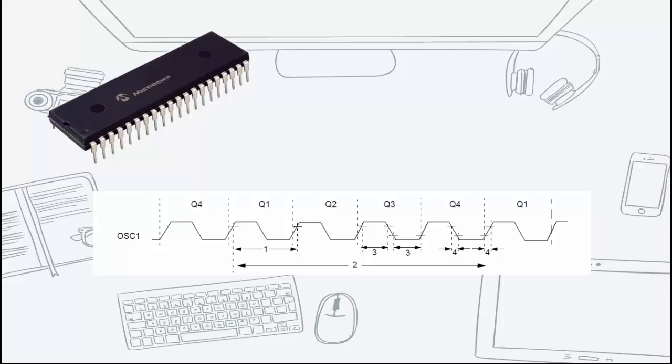Let's take a PIC microcontroller as an example. Each signal that goes into the microcontroller is assigned into one of the four quadrants, namely Q1, Q2, Q3, and Q4.